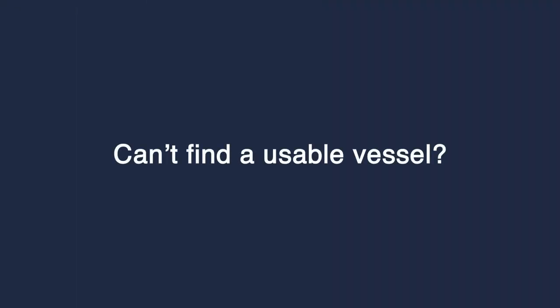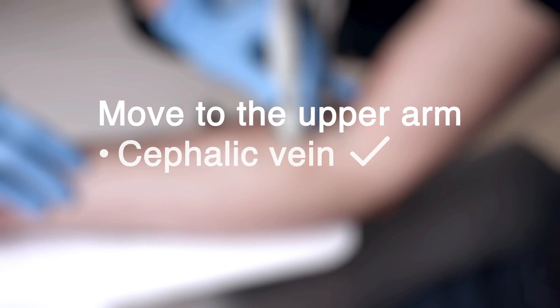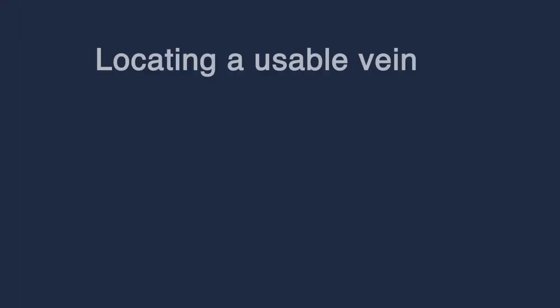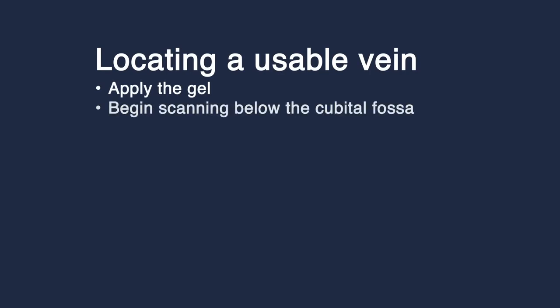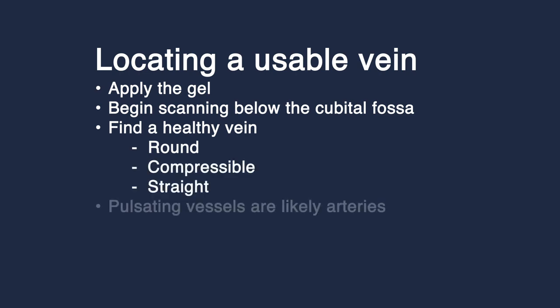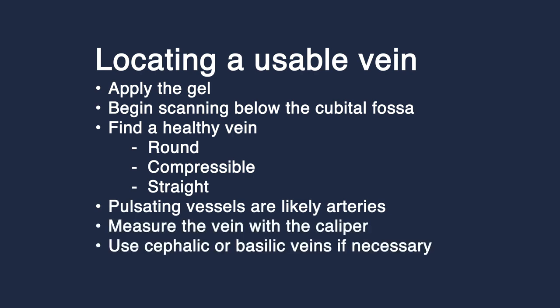If you're unable to visualize a usable vessel in these locations, move to the upper arm and try the cephalic or basilic veins. To recap: apply the gel, begin scanning below the cubital fossa, choose vessels that are round, compressible, and straight in nature. Remember, a pulsating vessel is most likely an artery and is unsuitable. You can measure the vessel with the caliper, and if necessary, you can use the veins in the upper arm.